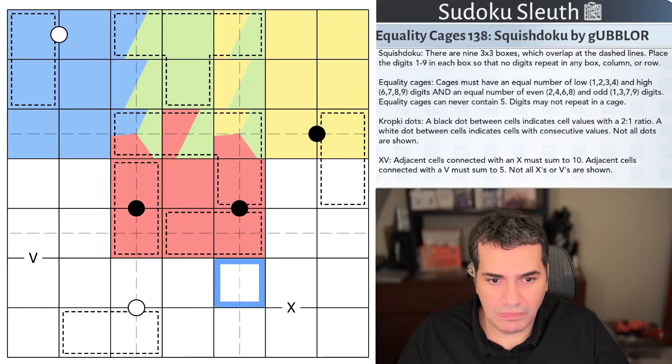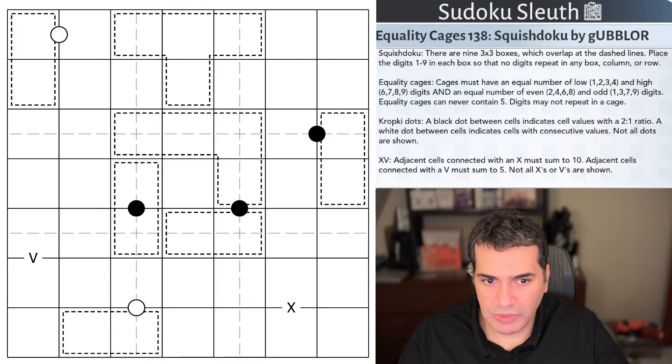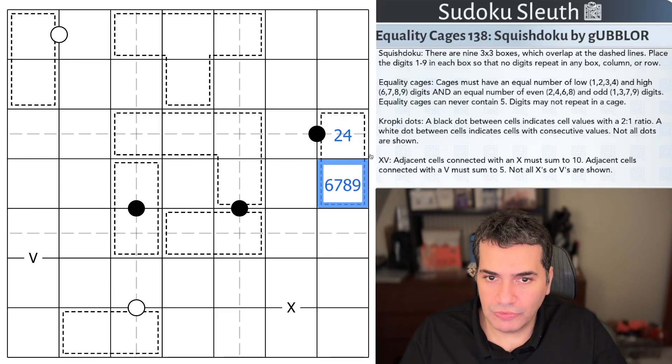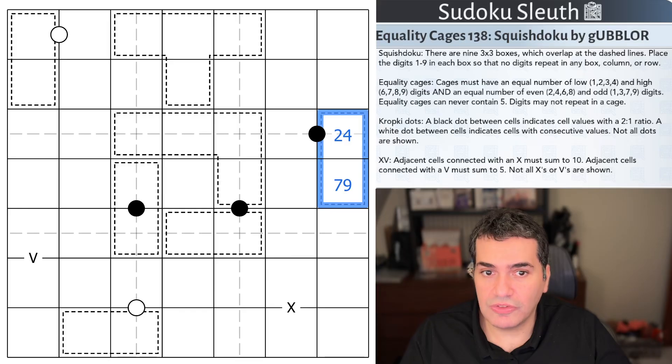Equality cages must have an equal number of low digits 1, 2, 3, 4 and high digits 6, 7, 8, 9. But I also have to have an equal number of even digits such as 2, 4, 6, 8 and odd digits such as 1, 3, 7, 9. This will be a valid pencil mark for this equality cage. Digits may not repeat inside a cage, and they cannot contain a 5. Fairly straightforward.